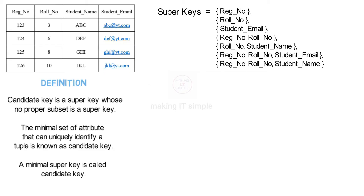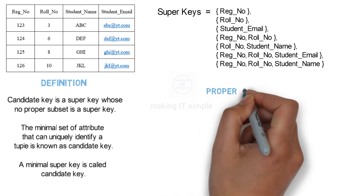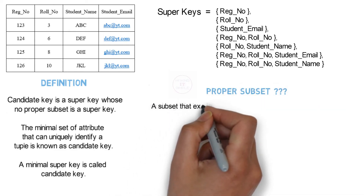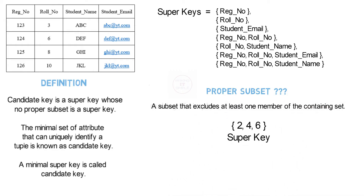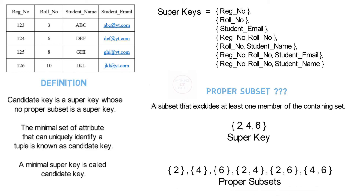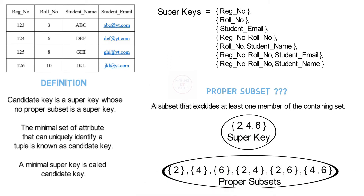Now we need to find candidate keys out of these super keys. As per the definition, candidate key is a super key whose no proper subset is a super key. A proper subset is a subset that excludes at least one member of the containing set. For example, if {2, 4, 6} is a super key, these are all its proper subsets. This super key can become a candidate key only if none of its proper subsets is a super key. If any one proper subset is already a super key, then this super key is not a candidate key.